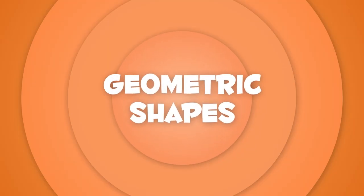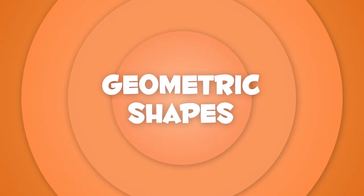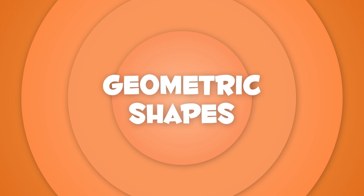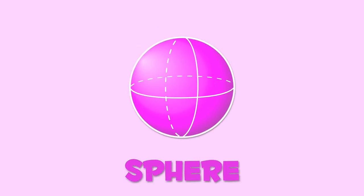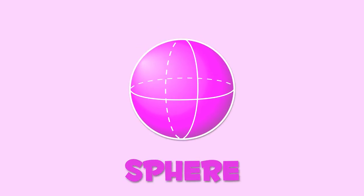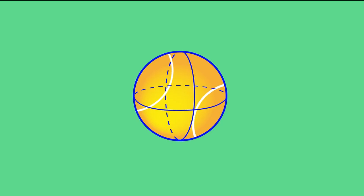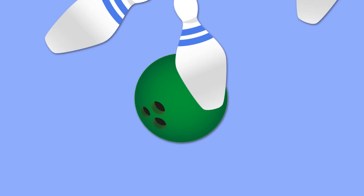Today we're going to learn about geometric shapes. Do you know how many types there are? Here they come! Take a guess — what is this? Yes, it's a sphere! Spheres look like this tennis ball, or like this bowling ball.